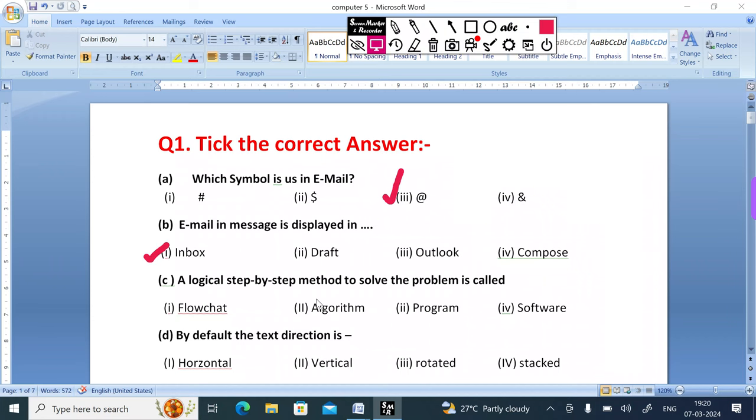Question number C: A logical step by step method to solve the problem is called: 1 flowchart, 2 algorithm, 3 program, 4 software. The correct answer is option 2, algorithm.